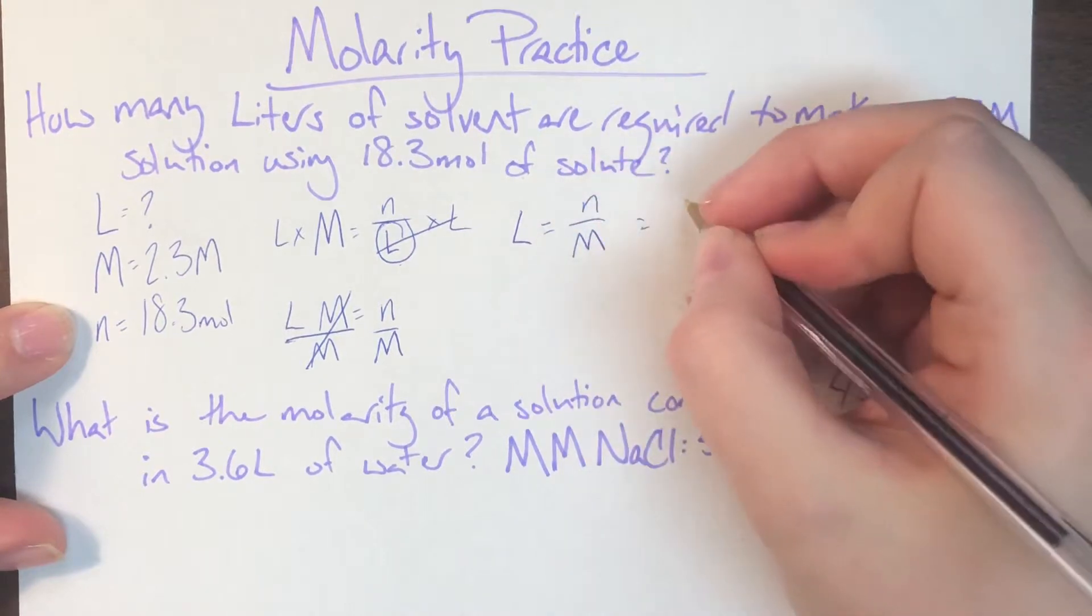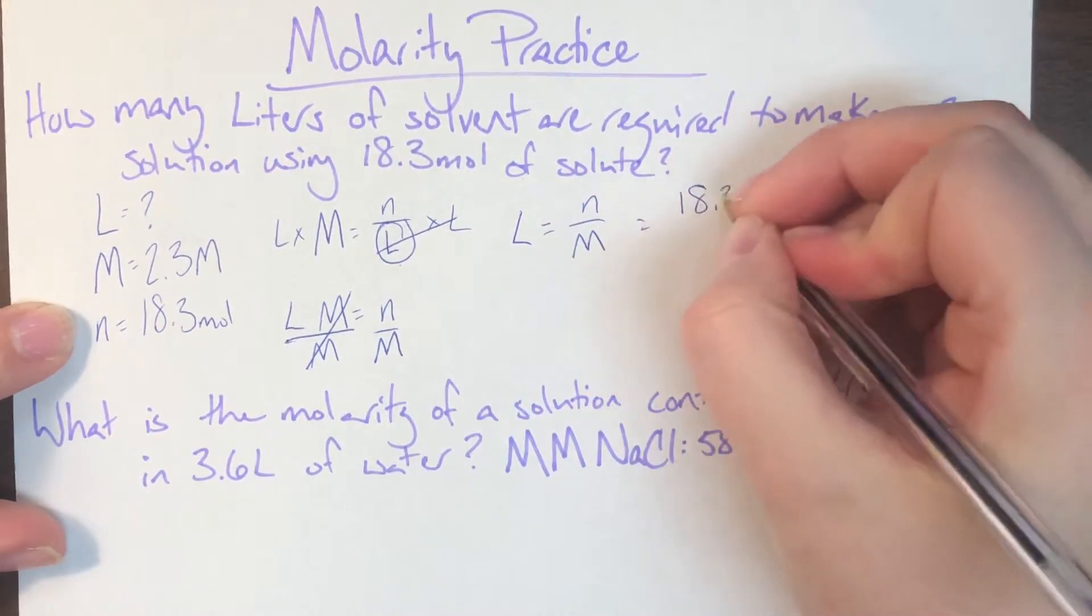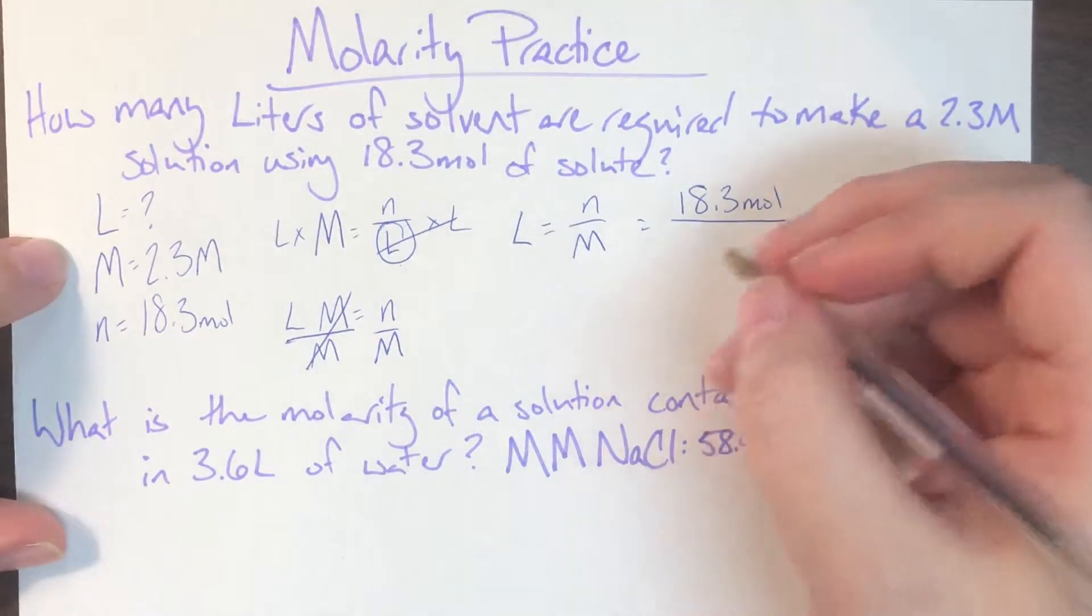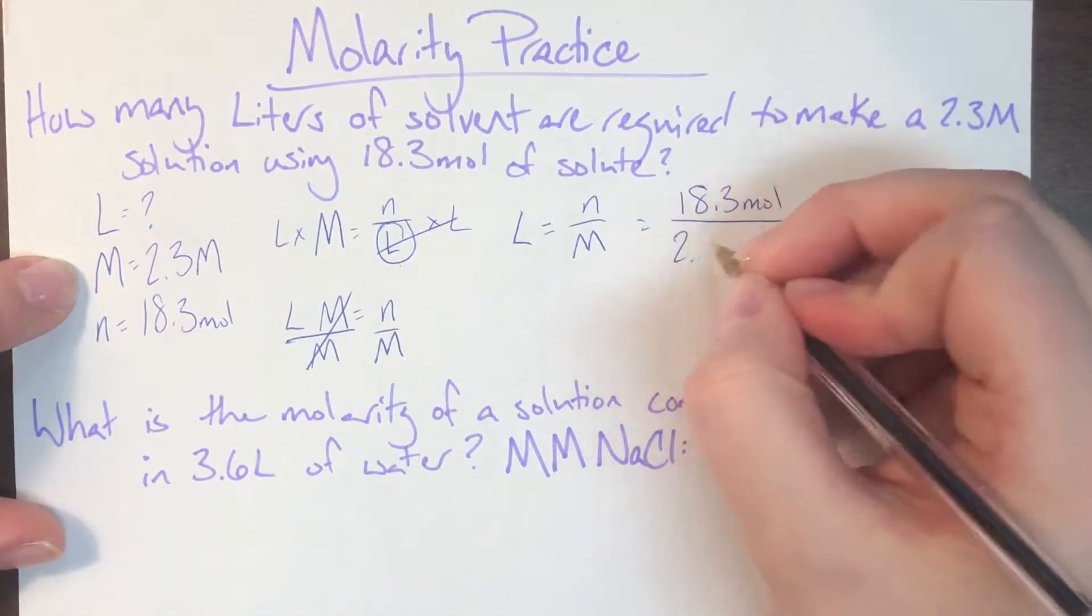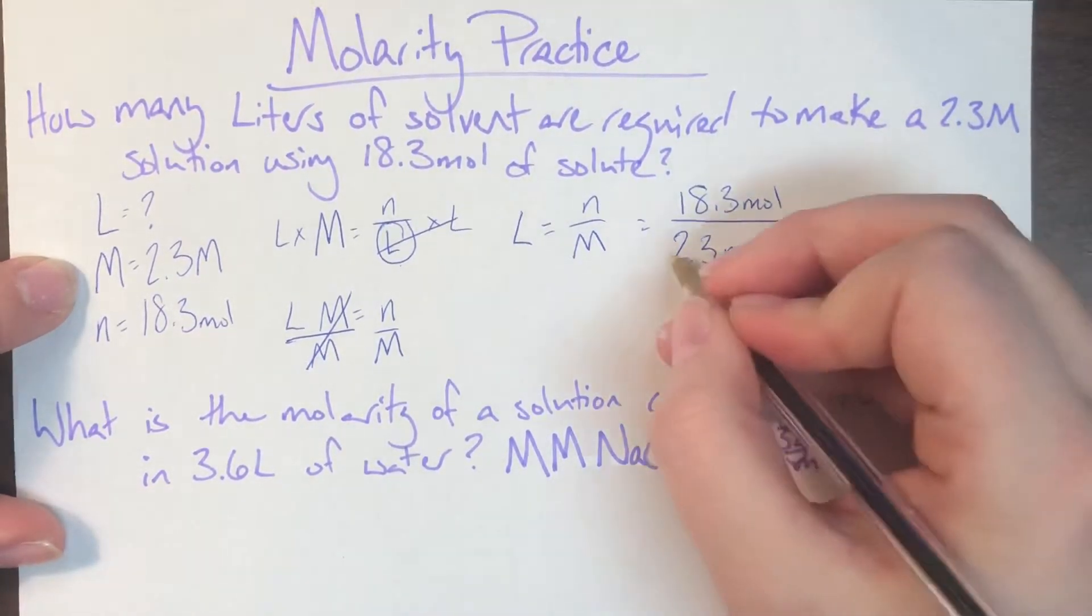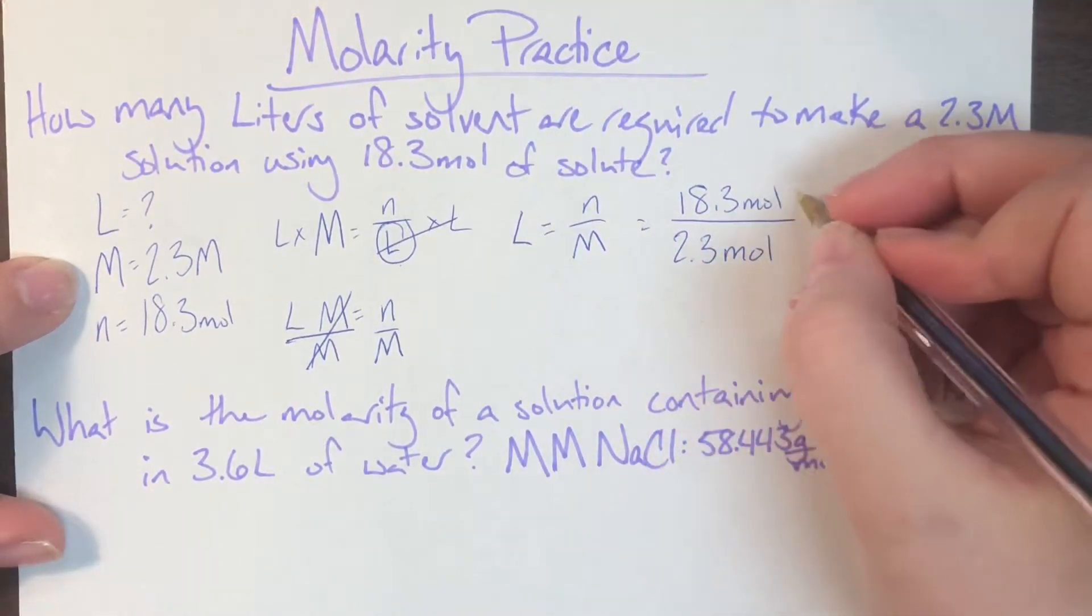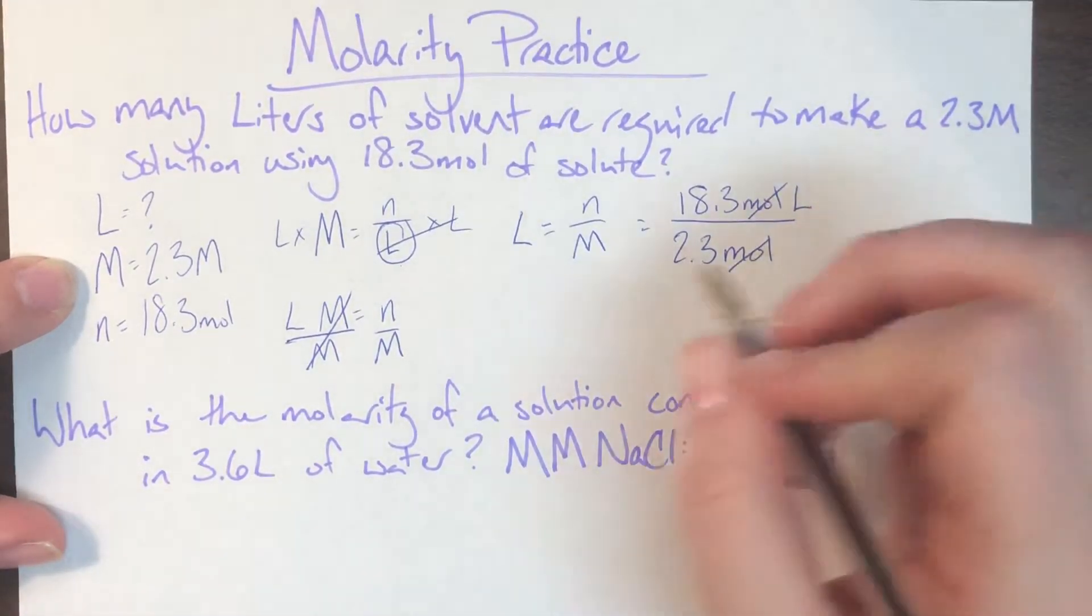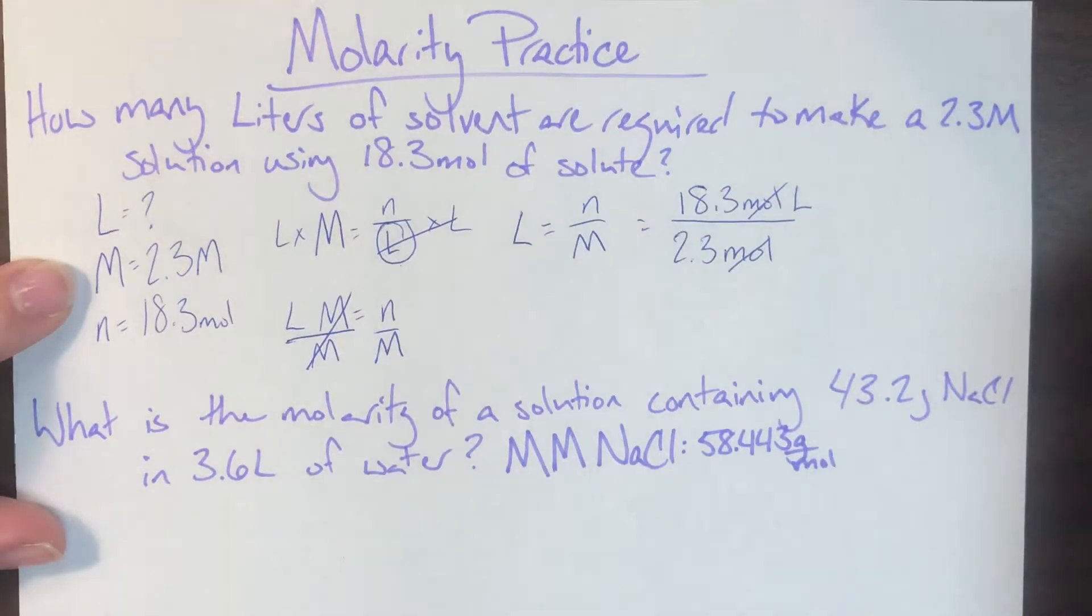So my moles of solute is 18.3 moles and my molarity is 2.3 molar, which is secretly moles per liter. Now since I'm on the bottom here, that per liter will flip up to the top. Moles will cancel, leaving me with liters, which is an appropriate unit for my liters of solvent. So I'll go ahead and plug that in.